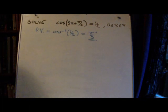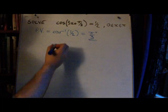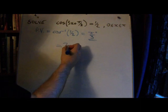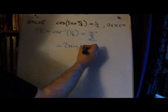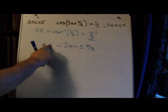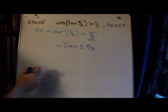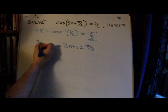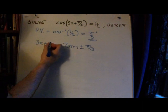Now, the general solution for cosine in radians is 2πn plus or minus the principal value. On this side, we're going to put the argument. So instead of x, we're going to have 3x plus π over 3.